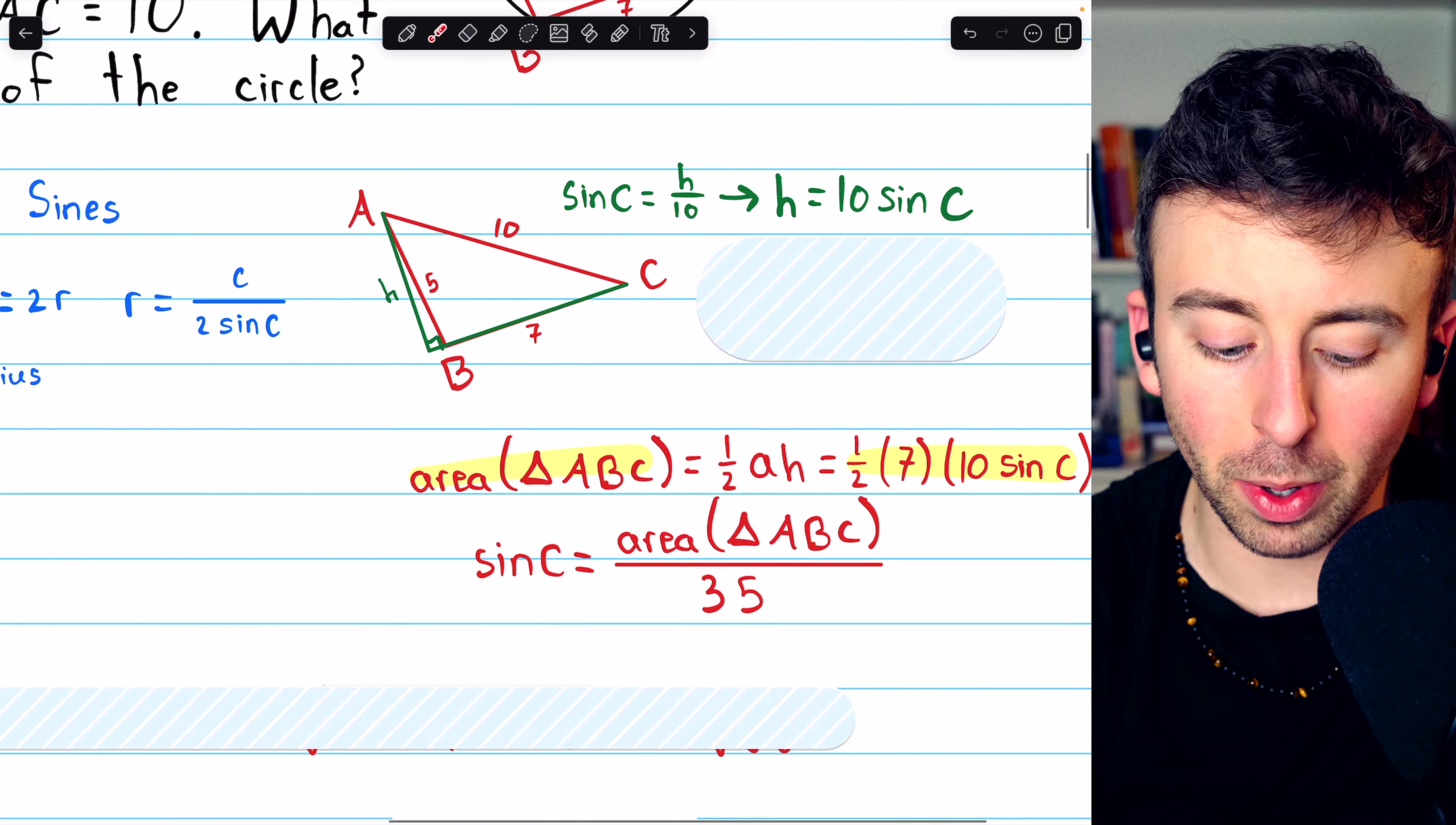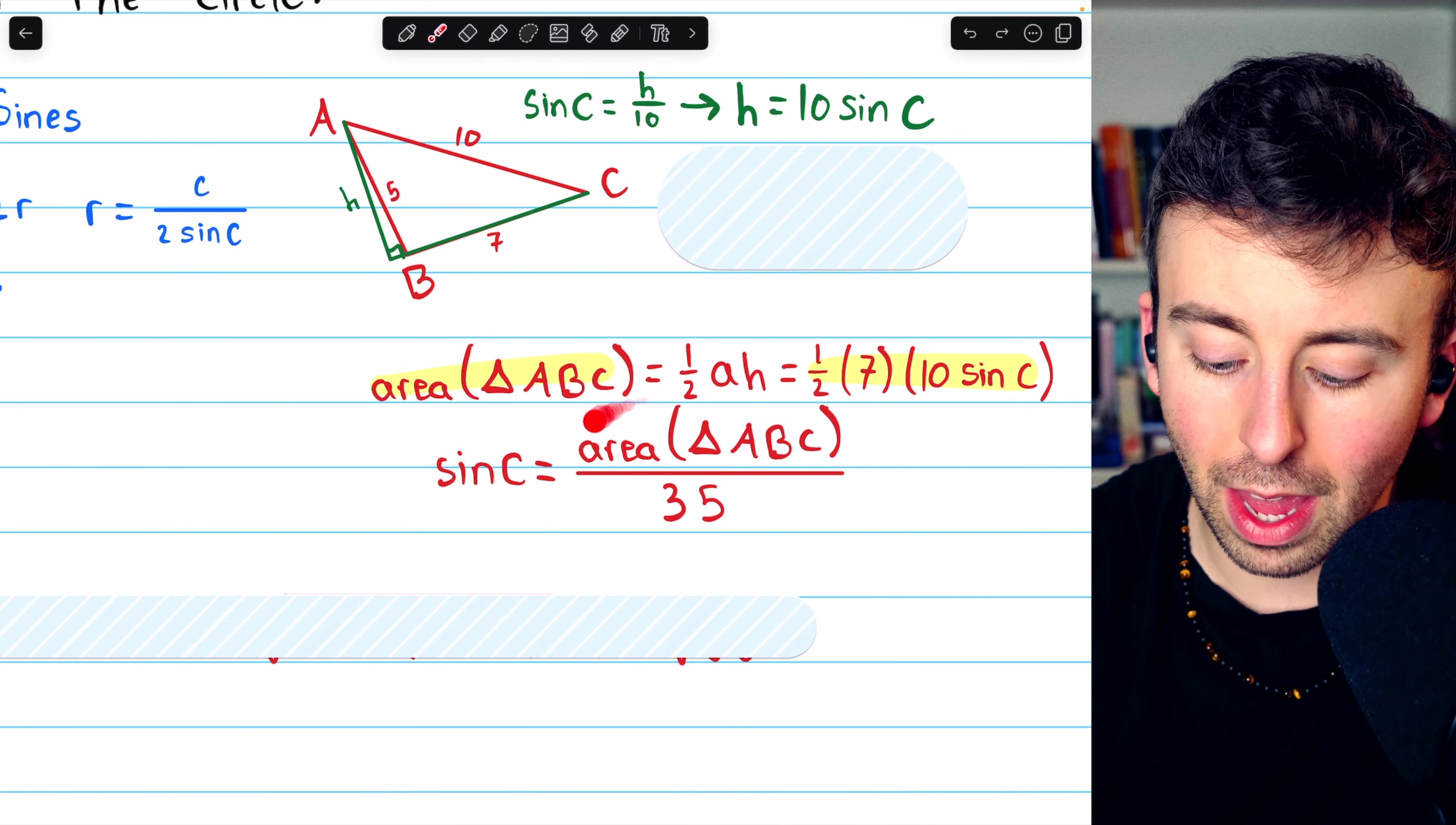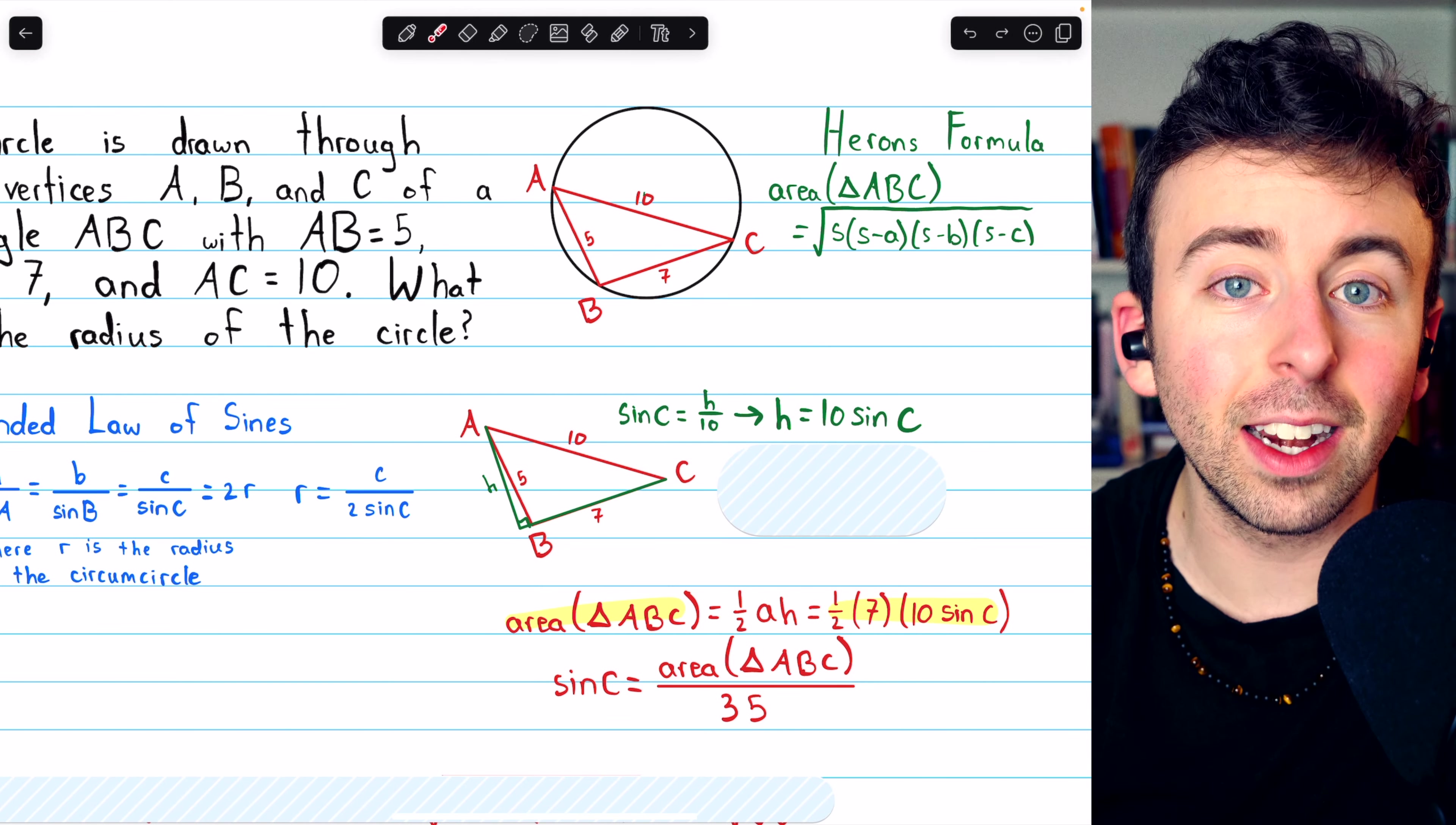We're almost there, because remember, we're looking for the radius of the circumcircle, and in order to find that radius, we just need to find sine C. Here, we've got sine C, but we've written it in terms of the area of the triangle. So now all we have to do is find the area of the triangle using Heron's formula, which we can do because we know every side of the triangle.